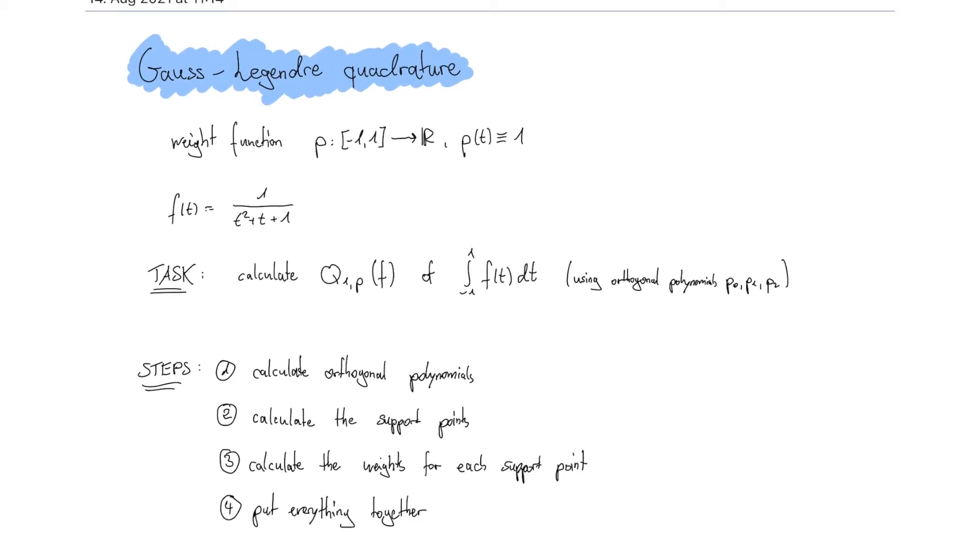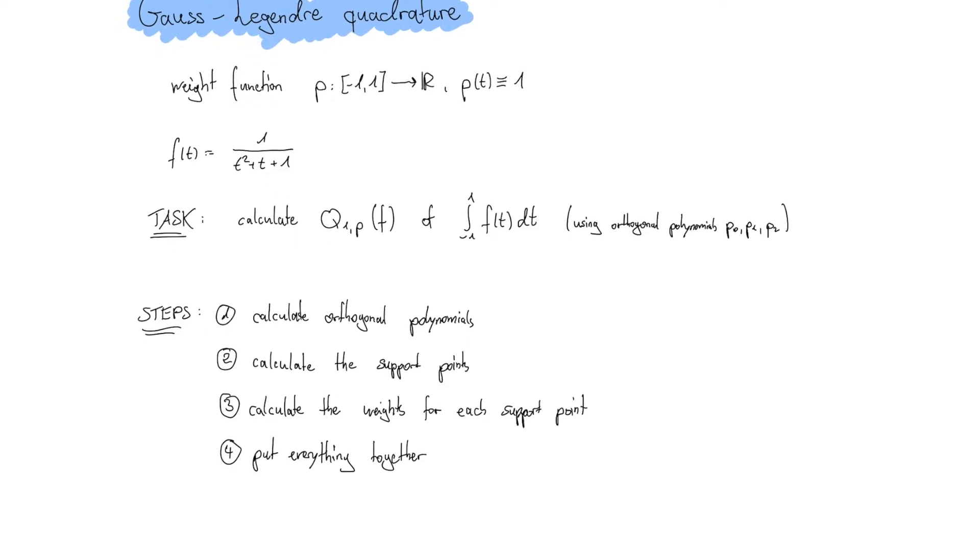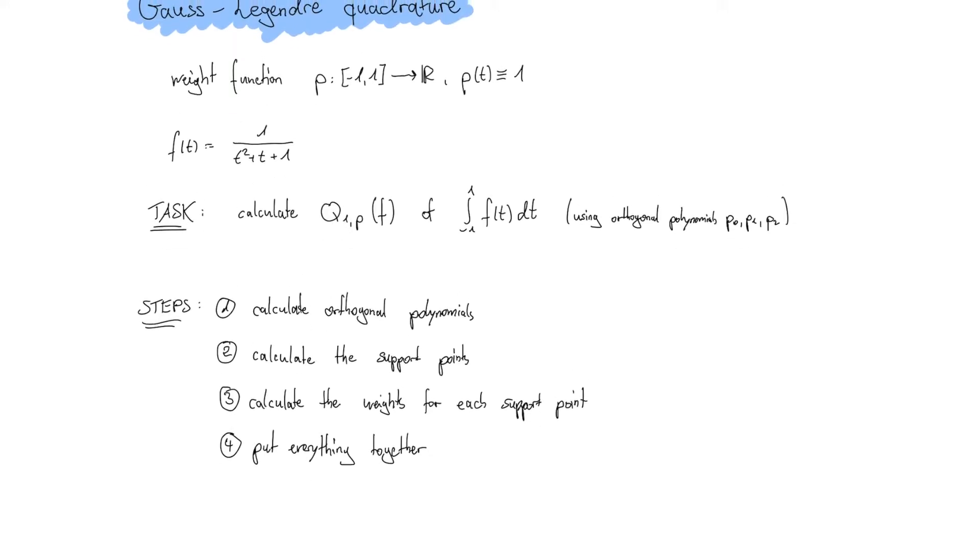I have divided the way we will solve this task into four steps. The first step is calculating the orthogonal polynomials. The second one is calculating the support points and the third one is calculating the weights for each support point, and the fourth is putting everything together.